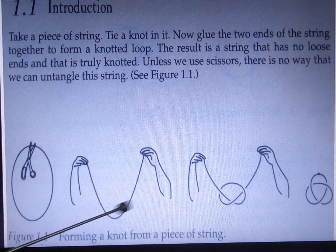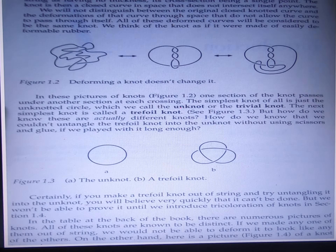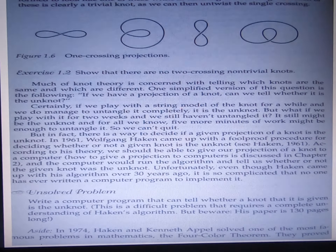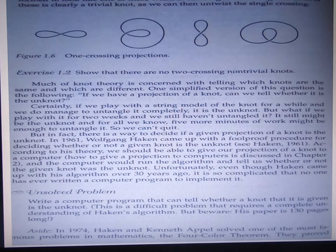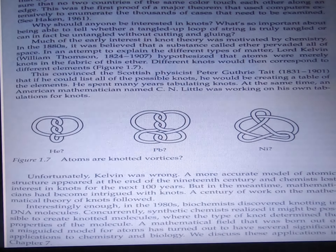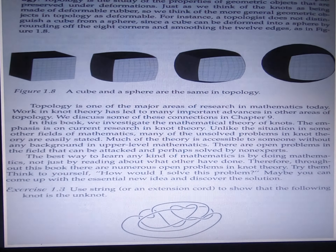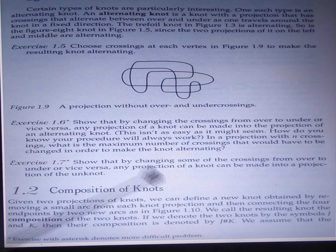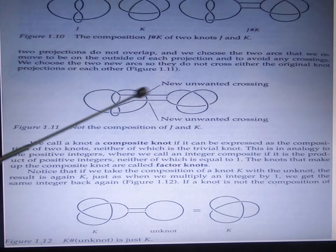So these are the knot definitions, with some examples. These are the same in topology terms — topologically equivalent. Two knots joined together.